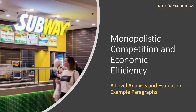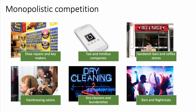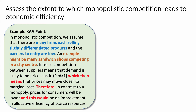Welcome to another video looking at some example paragraphs for A-level economics — how to build a good solid KAA paragraph followed by an evaluation paragraph. This question refers to the market structure known as monopolistic competition, highly common in many towns and cities, including competing hairdressing salons, laundrettes, dry cleaners, and sandwich bars in an intensely urban environment. The question is: assess the extent to which monopolistic competition leads to economic efficiency. We'll take you through one example of a KAA paragraph and a follow-up evaluation paragraph to get good marks.